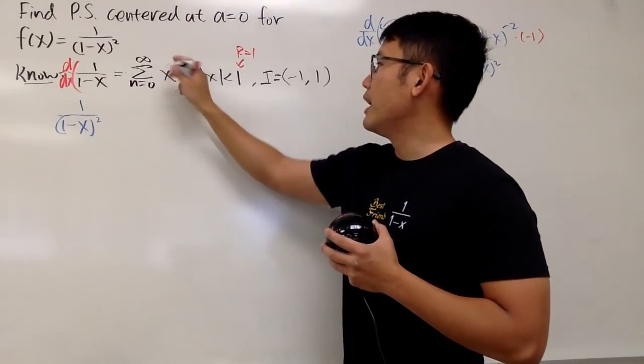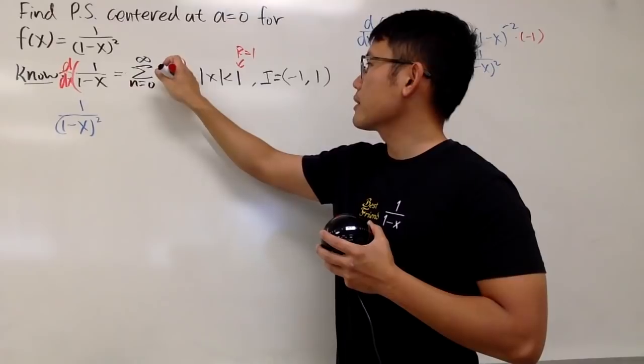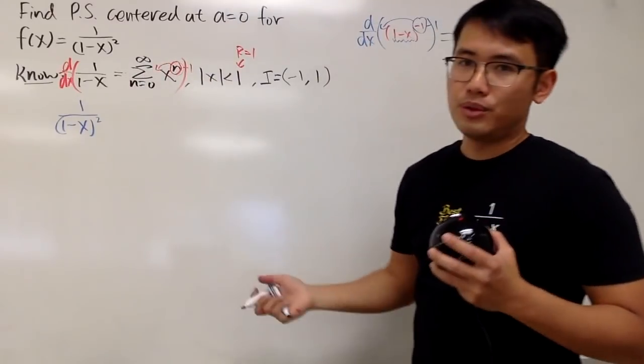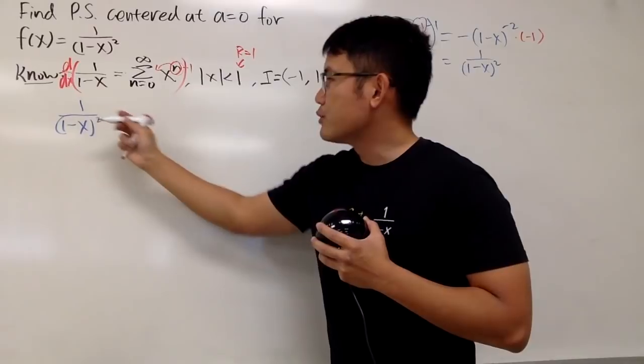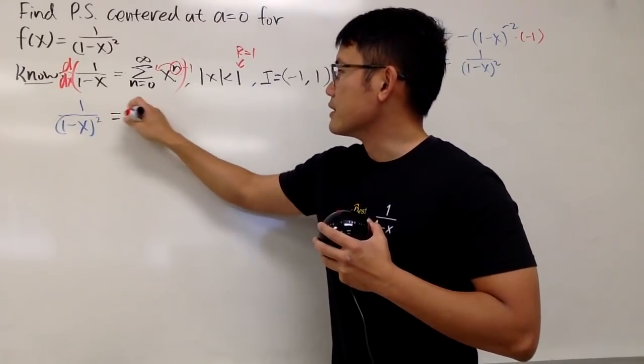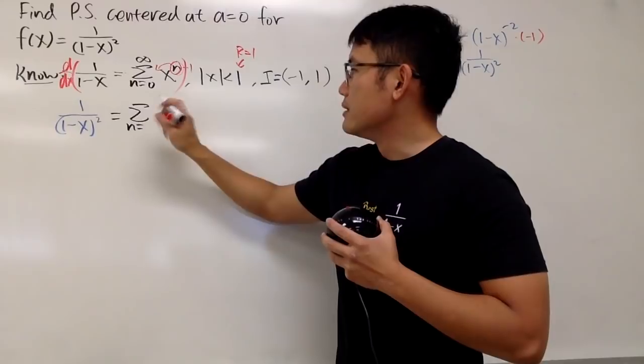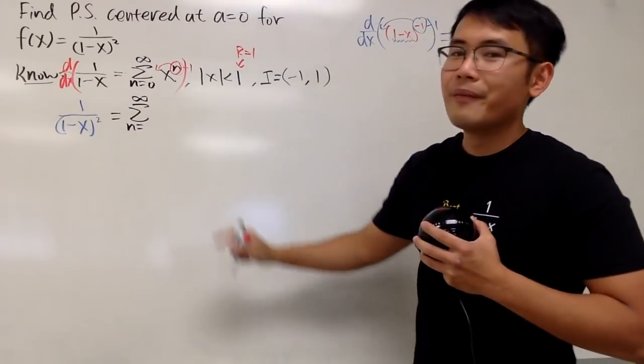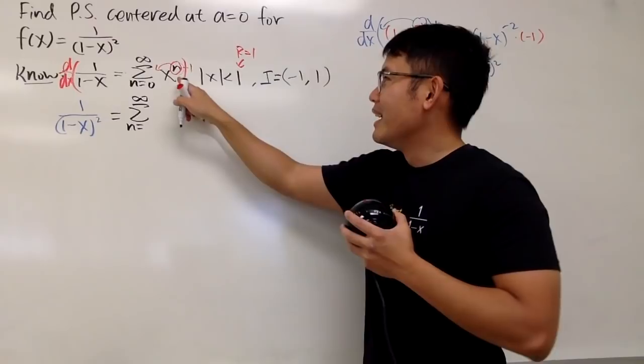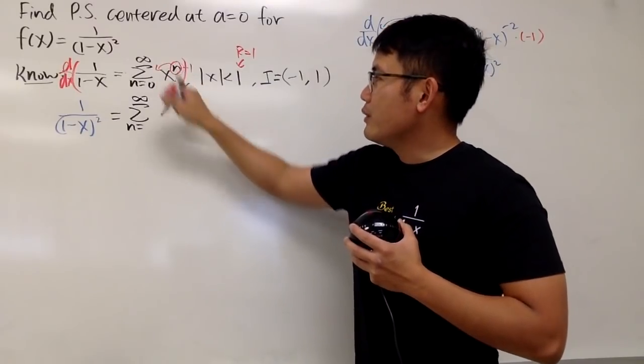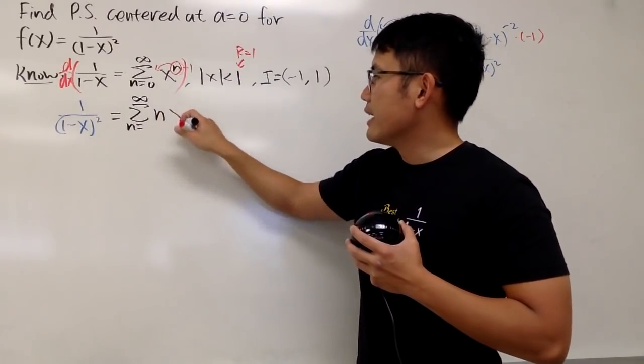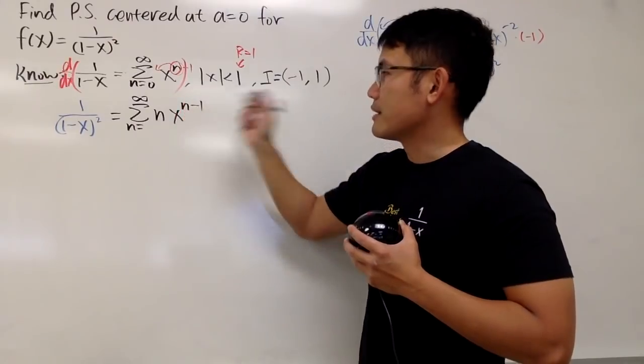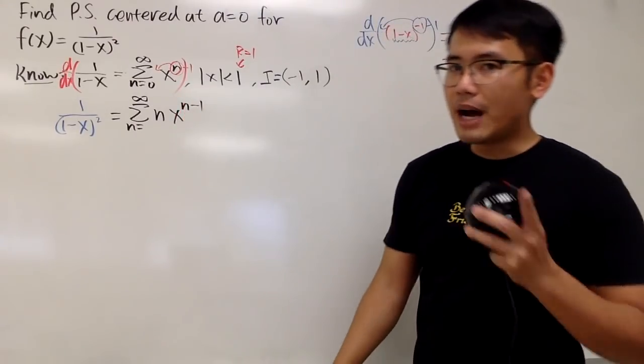We can just bring the n to the front, and then minus 1. That's pretty much it. So this is equal to the sum as n goes from something to infinity. You'll see why I say something. Well, you can put the n right here first, n and then x to the (n-1) power.